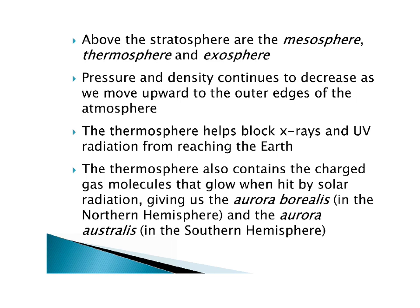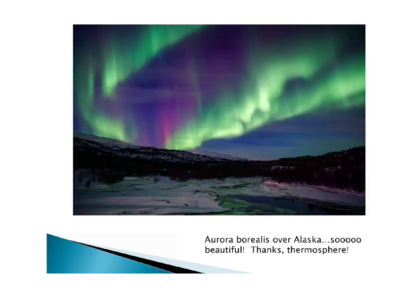The thermosphere contains charged gas molecules that glow when hit by solar radiation. This gives us the aurora borealis — the northern lights in the northern hemisphere — and the aurora australis, the southern lights in the southern hemisphere. These are charged gas particles releasing their radiation — they're glowing, releasing light energy. They were hit by solar radiation during the daytime, the molecules get excited, and as they fall back down to their normal states, they emit light energy. This picture was taken over Alaska — atmospheric physics at its finest.